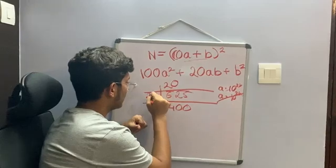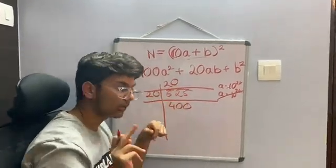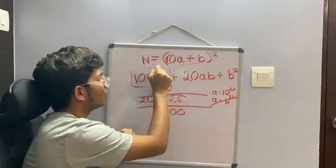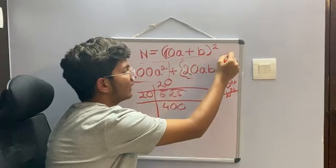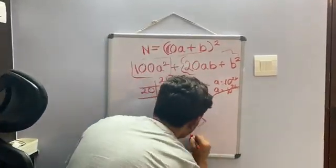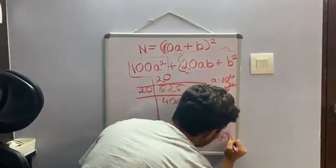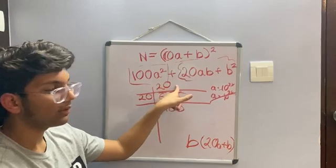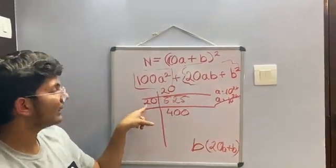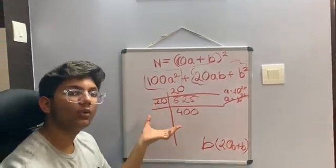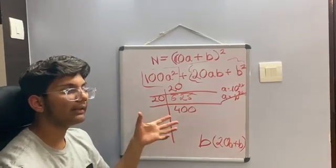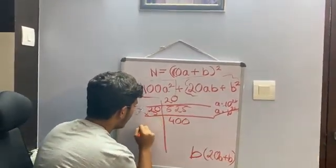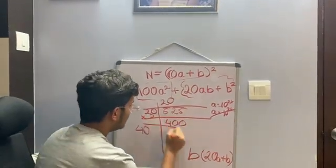We have the square root of this as 20 here, and then we put this 20 over here. Often the zero is left out, but the correct way is to put this zero. Now we know this is equal to 400. So our next job is to find the remainder, which can be rewritten as b × (20a + b). And this 20 is nothing but two times what we got here — this is 10a, this is 20a, so just multiply by 2. Often we're told to add 20 + 20, but that's not actually 2; it's 20 × 2, which gives us 40.